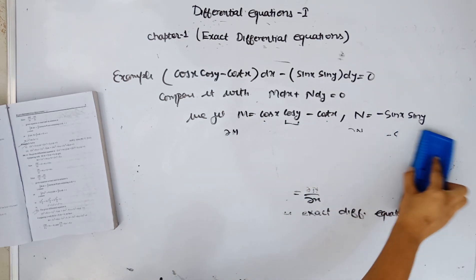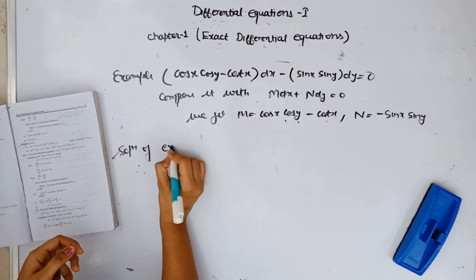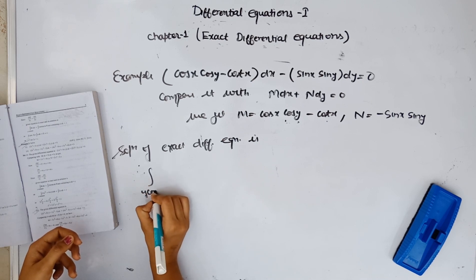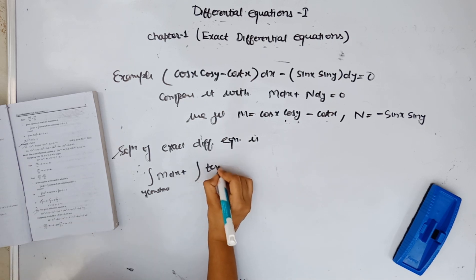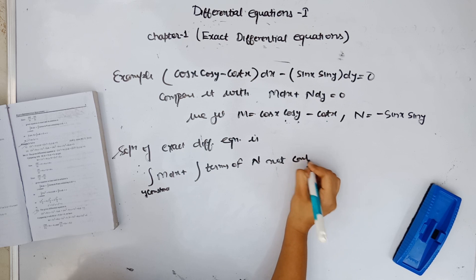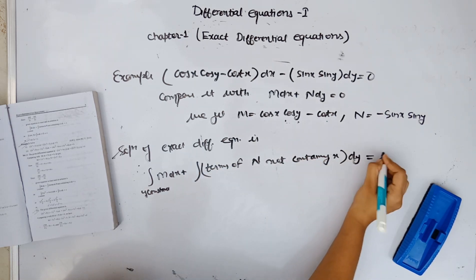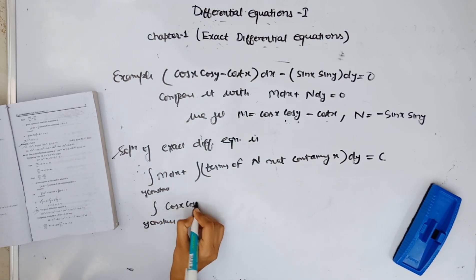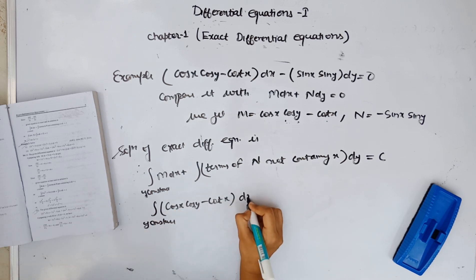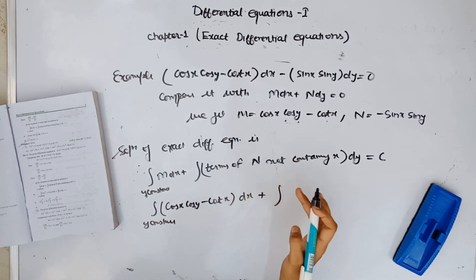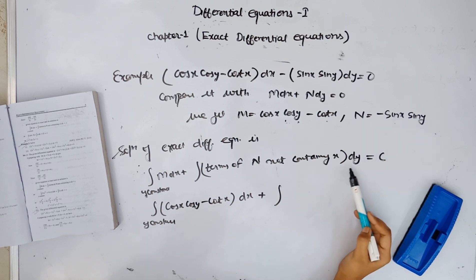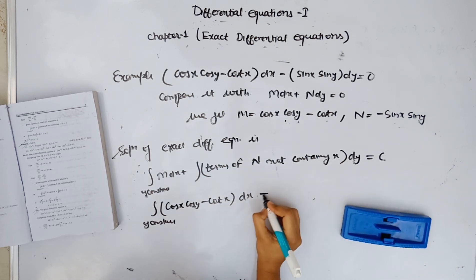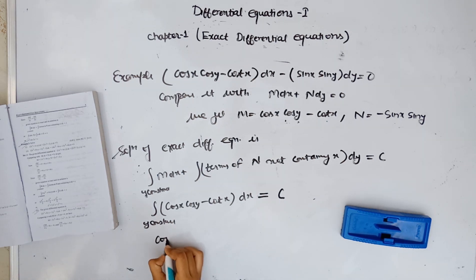Now for the solution of this exact differential equation, we apply: integration of M dx treating y as constant, plus integration of terms of N not containing x, dy, equals c. We check N for terms not containing x, but there are no terms of N which do not contain x, so that part is zero.